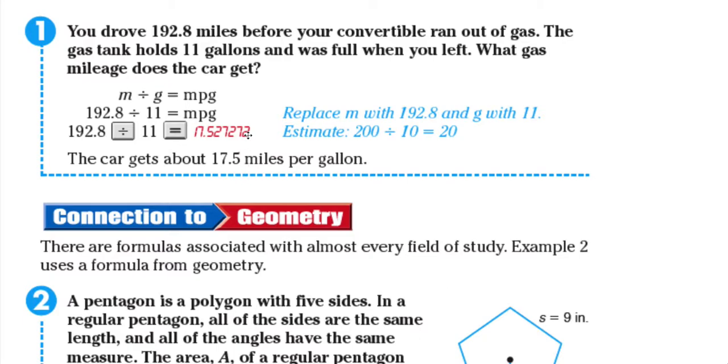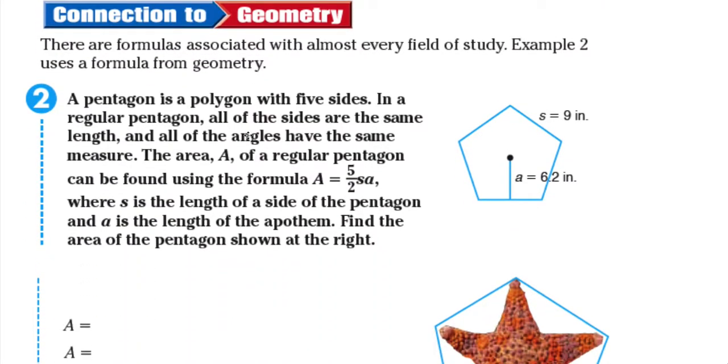Let's take a look at another formula. There are formulas associated with almost every field of study. Example two uses a formula from geometry. A pentagon is a polygon with five sides. In a regular pentagon all of the sides are the same length and all the angles have the same measure.